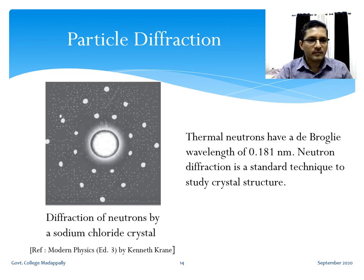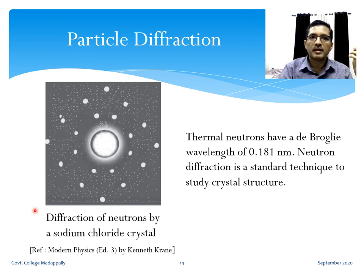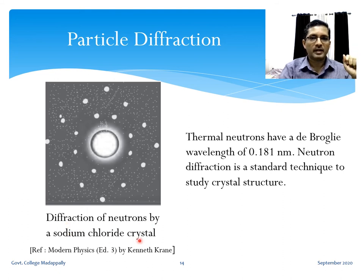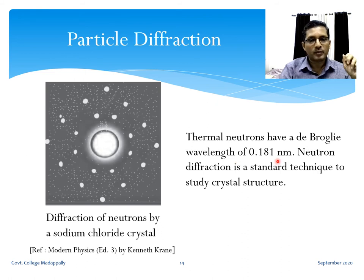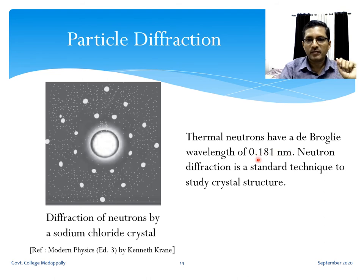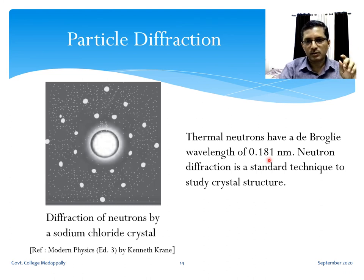After electron diffraction, people began doing diffraction with other particles. For example, neutron diffraction from a sodium chloride crystal. Thermal neutrons — neutrons in thermal equilibrium at room temperature, 300 K — have a de Broglie wavelength of 0.181 nanometers, which is 1.81 angstroms. This is a typical interplanar distance in a crystal, so neutron diffraction is a standard technique to study crystal structure.